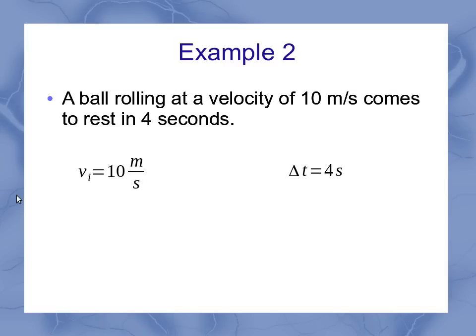Again, we're given a couple of knowns, but in this case the velocity is the initial velocity. And from the words in the problem, we see that it's the final velocity which is 0 meters per second.